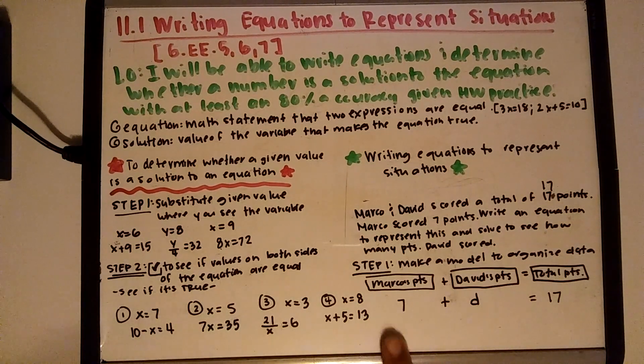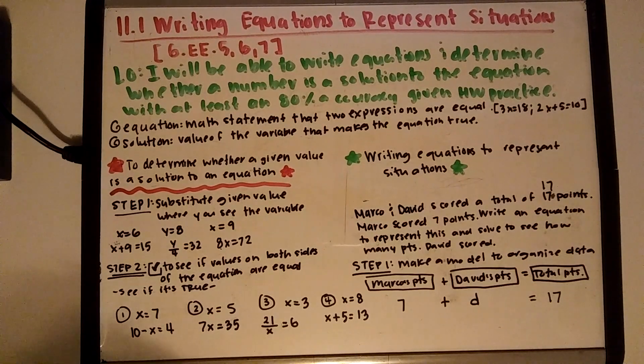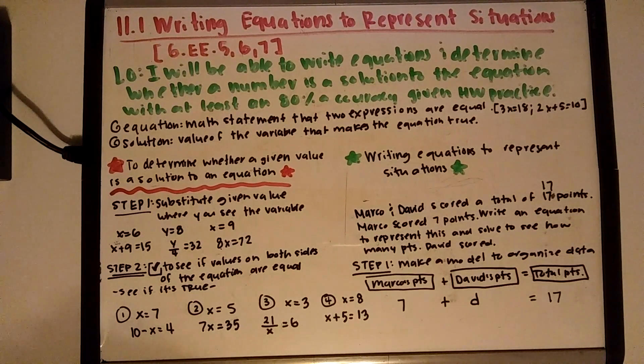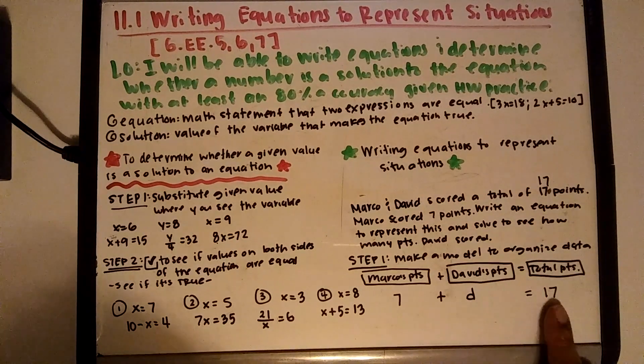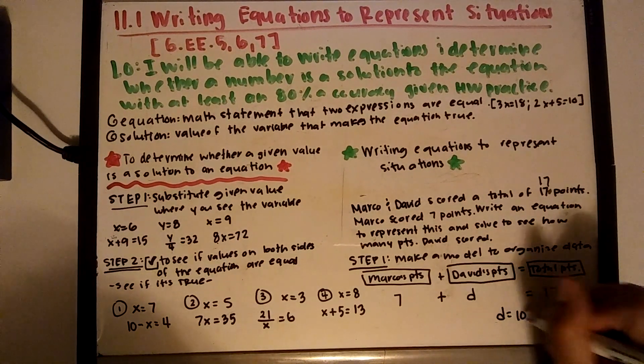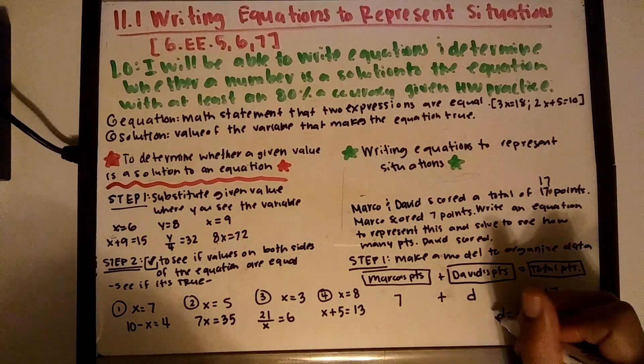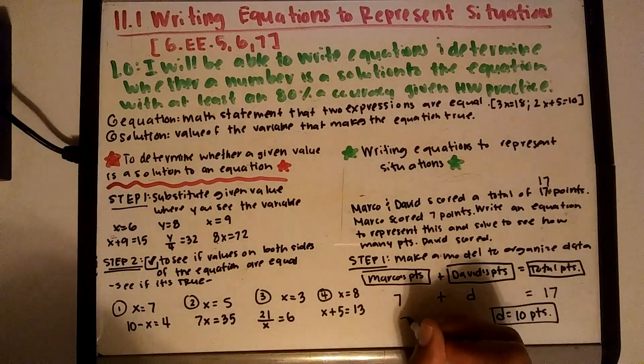So the question is 7 plus what equals 17. That's kind of like an easy one to do. I'm going to go ahead and kind of jump you to the next lesson because you're eventually going to have to do this. You know that basically 7 plus what gives us 17 is 10. So then David scored 10 points.